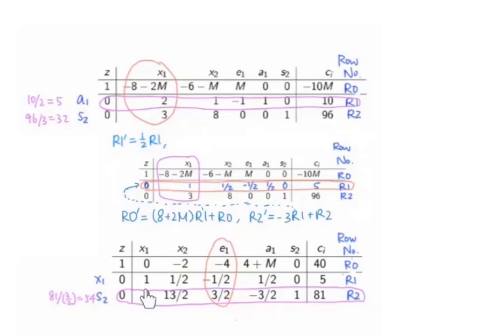Notice that if we take x1 to be 5, x2, e1, a1 to be 0, s2 to be 81, and z equals 40, the solution is not yet optimal.